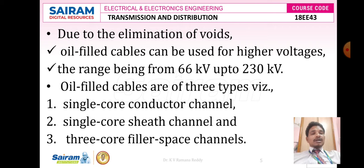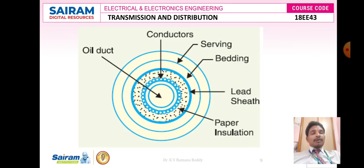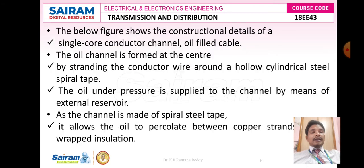This figure shows the single core conductor channel. In this figure, the single core conductor channel consists of only one channel or only one oil duct to pump the pressurized oil in order to close the voids or treeing and tracking. Apart from single core conductor channel, there are other types of classifications which are called as single core sheath channel and three core filler space channels. These are also used to close the voids or treeing and tracking.